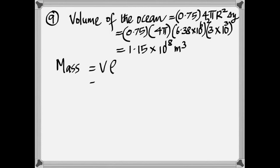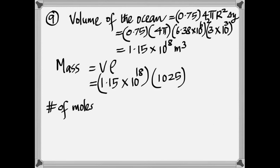So that's the total volume of all the oceans. Find the mass. Mass is volume times density. It's the density of sea water. That's why it's 1025.